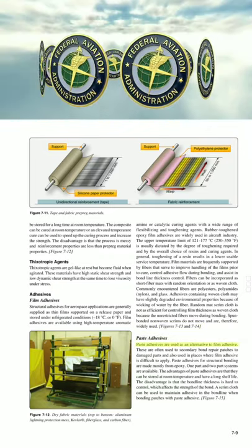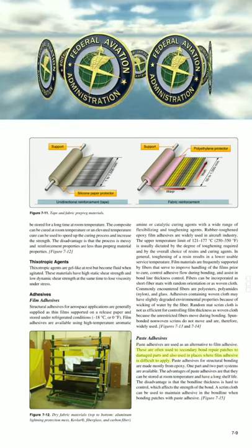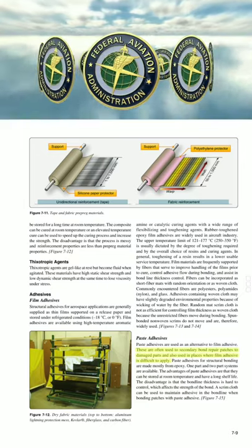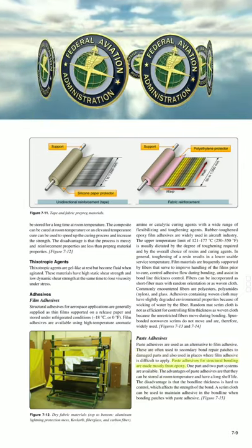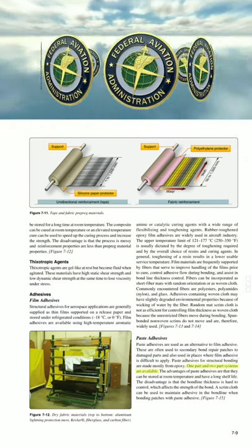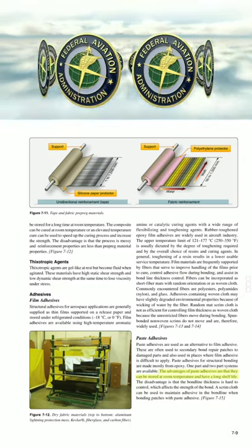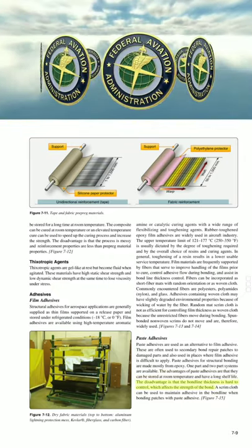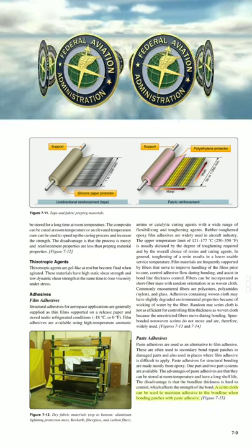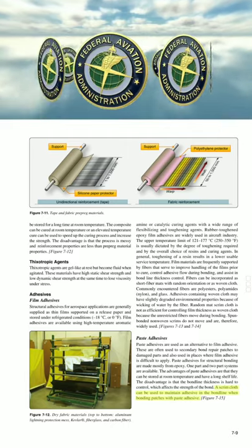Paste adhesives. Paste adhesives are used as an alternative to film adhesive, often to secondary-bond repair patches to damaged parts and in places where film adhesive is difficult to apply. Paste adhesives for structural bonding are made mostly from epoxy, with one-part and two-part systems available. Advantages include room-temperature storage and long shelf life. The disadvantage is that bond line thickness is difficult to control, which affects bond strength. A scrim cloth can be used to maintain adhesive in the bond line when bonding patches with paste adhesive.